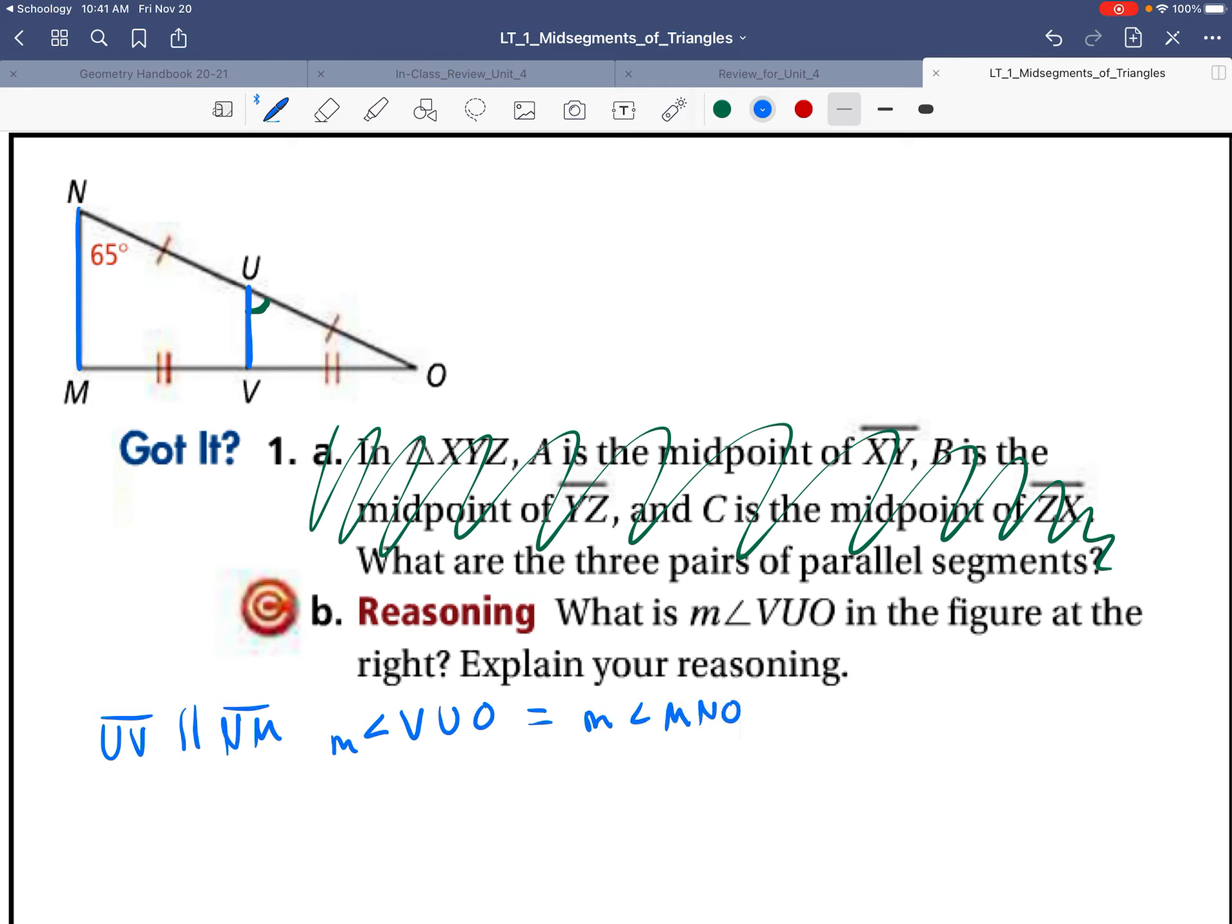The reasoning is these are two corresponding angles. When you have two lines that are parallel, cut by a transversal—this would be my transversal—those two angles are corresponding angles. So we know the measure of angle VUO is 65 degrees.